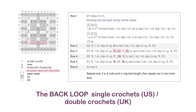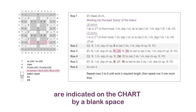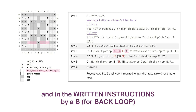The back loop single crochets (US) or double crochets (UK) are indicated on the chart by a blank space, and in the written instructions by a B, which stands for back loop.